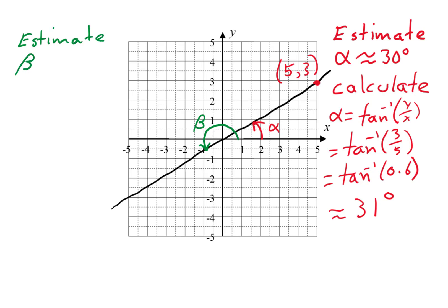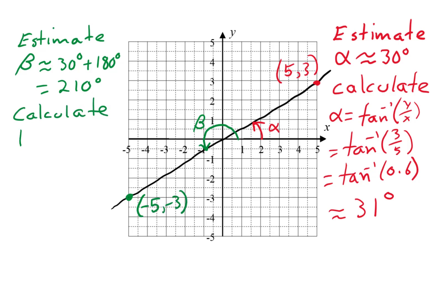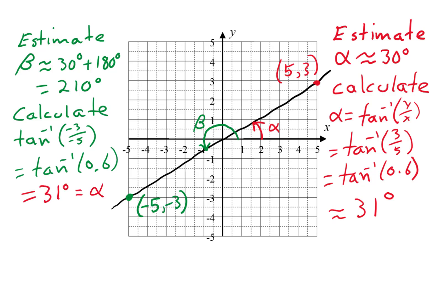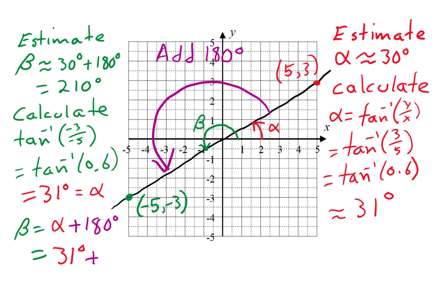Now for the angle beta. It appears to be about 30 degrees more than 180 degrees, so I'm estimating it at 210 degrees. The terminal side of beta passes through the point (negative 5, negative 3), so we use the inverse tangent of negative 3 over negative 5. The negatives cancel, so we get the inverse tangent of 0.6 — the same thing we had last time — giving 31 degrees, which was correct for angle alpha. Because beta is on the left side of the circle, we knew the inverse tangent could not give us the correct measure for angle beta. We can get beta by adding 180 degrees to angle alpha. This makes beta 31 degrees plus 180 degrees, so beta is 211 degrees, which agrees with our estimate.